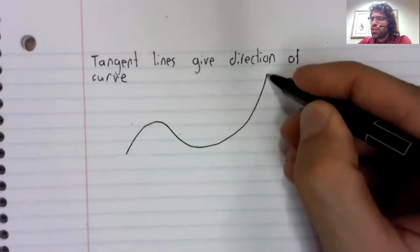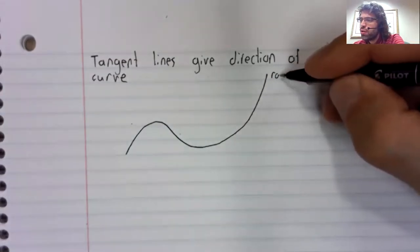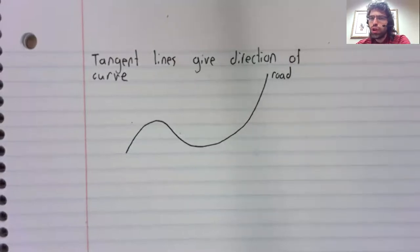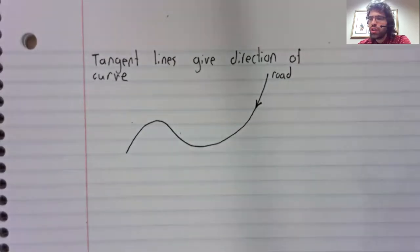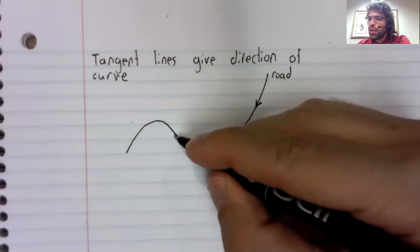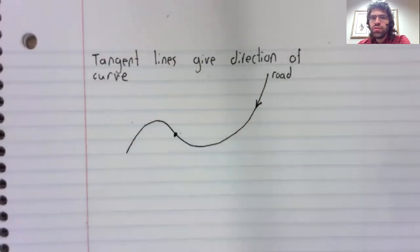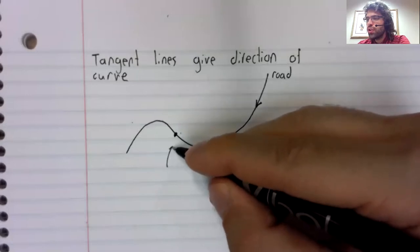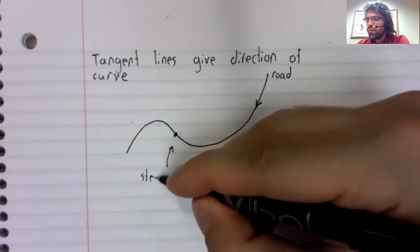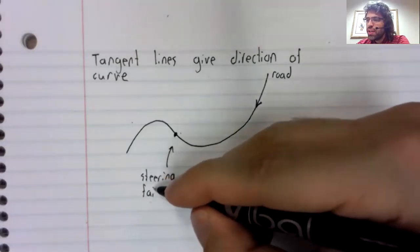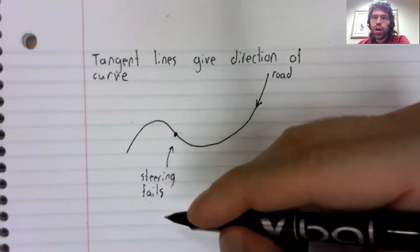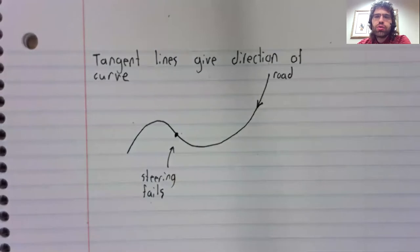For example, imagine this curve represents a road and a car is driving along this road. And at this point on the road, the steering wheel fails or locks up and the car loses the ability to turn.